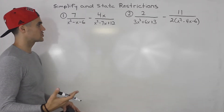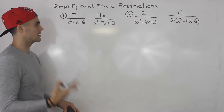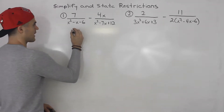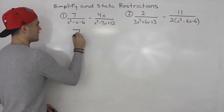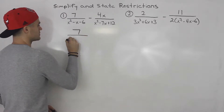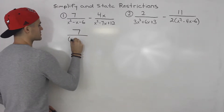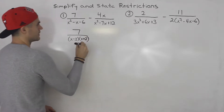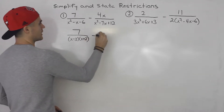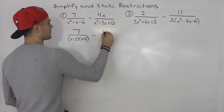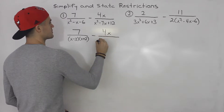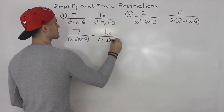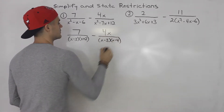The first step is to always check if you can factor anything. Notice that we could factor the first denominator into x minus three times x plus two. And then this second denominator can factor into x minus three times x minus four.